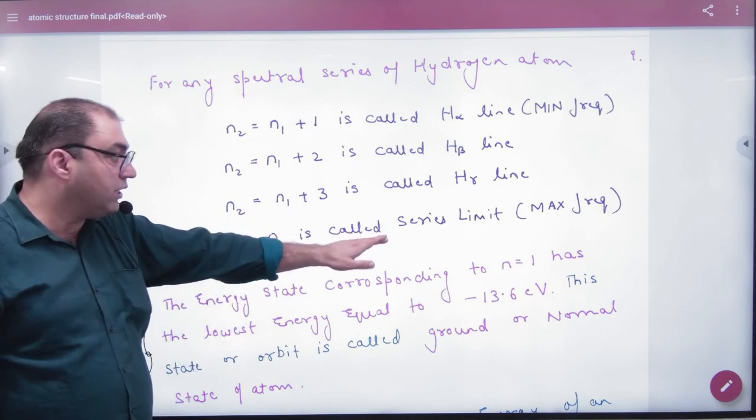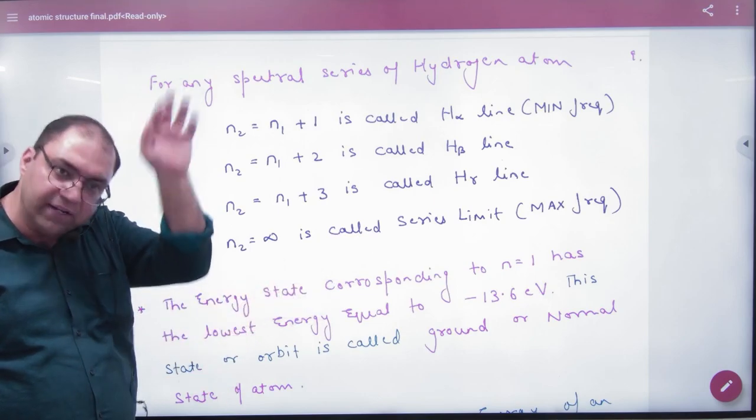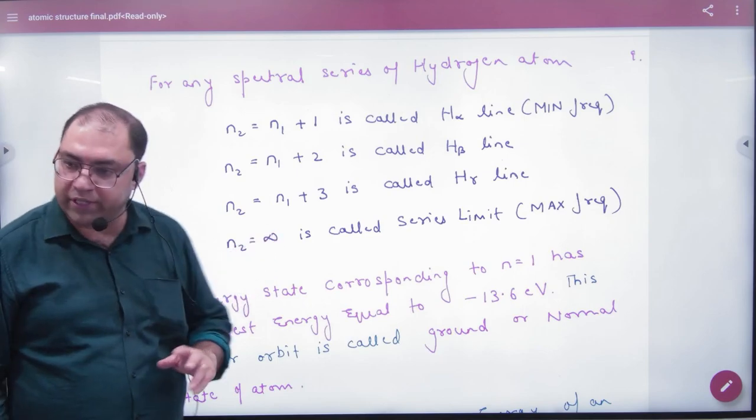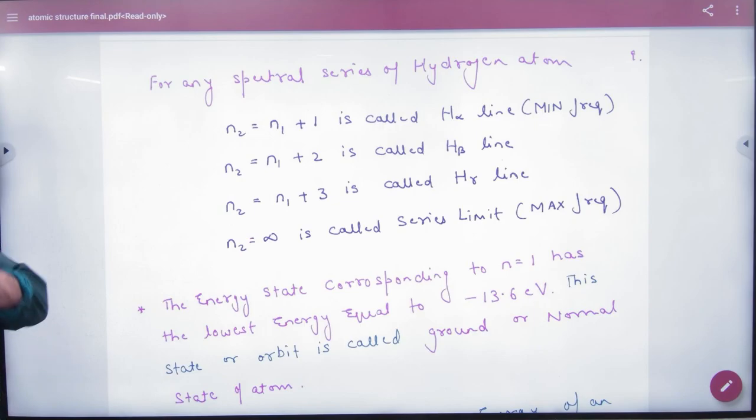What do you call series limit? That will be maximum frequency, meaning that the electron will drop from infinity. When n gets to infinity, it means that it would be a series limit.